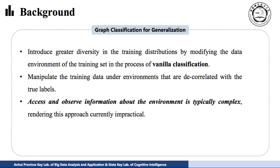To solve the graph out-of-distribution problem, we can introduce diversity in the training distribution by modifying the data environment of the training set. In the process of graph classification, we can manipulate the training data in environments that are correlated with the training labels, the true labels. However, assessing and observing information about the environment is complex.